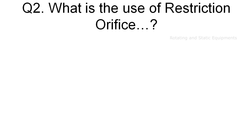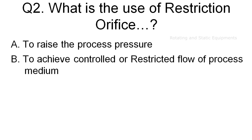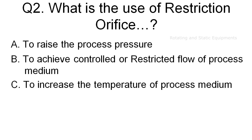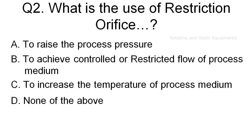Question 2: What is the use of a restriction orifice? Option A: to raise the process pressure. Option B: to achieve controlled or restricted flow of the process medium. Option C: to increase the temperature of the process medium. Option D: none of the above.